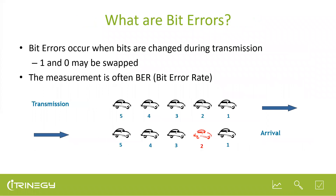Moving on to the second topic: bit errors. A bit error is when a one in the packet is swapped for a zero, or vice versa. It could be worse — some preamble bits may be lost, meaning the receiver can't even frame the packet, which results in immediate packet loss. This is often measured using the Bit Error Rate, or BER.